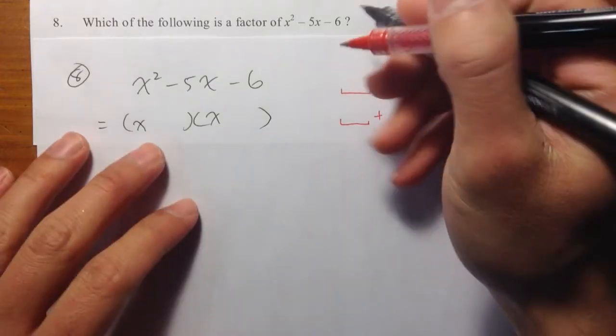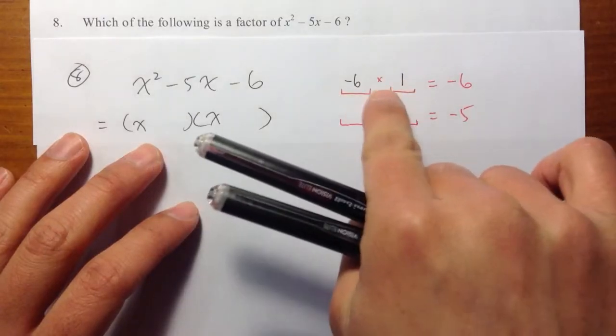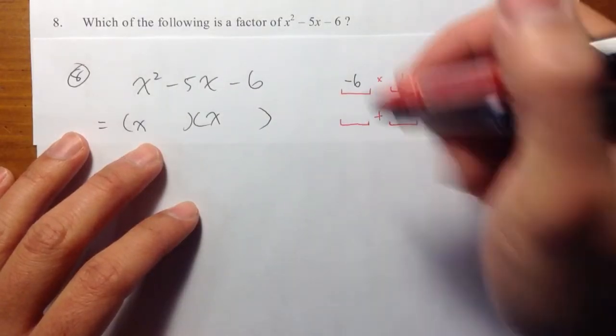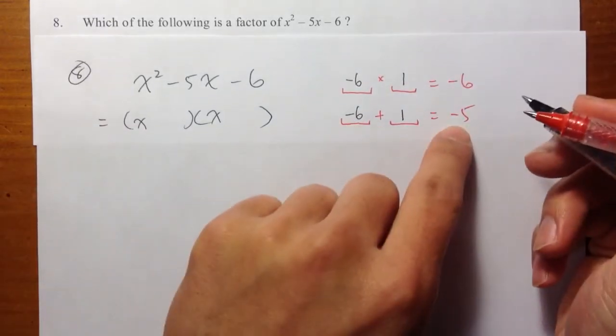The correct combination is negative 6 and positive 1. Negative 6 times 1 is negative 6, and then negative 6 plus 1 is equal to negative 5.